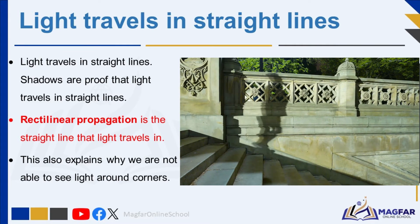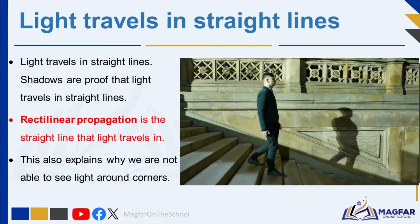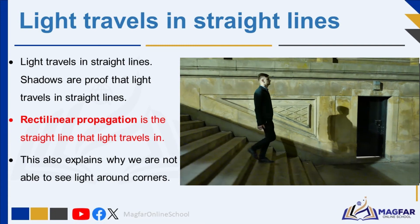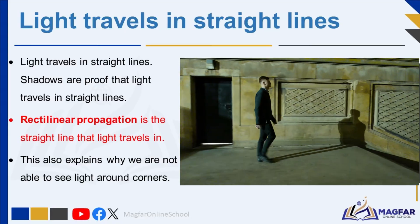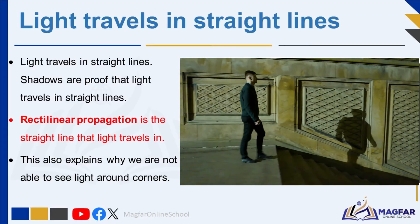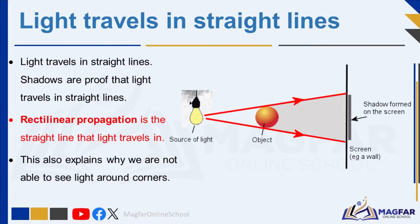An example of this principle in action is the formation of shadows. If light did not travel in a straight line, it would bend around objects, preventing the formation of shadows. Light travels in straight lines, and shadows are proof of this. Rectilinear propagation is the straight line that light travels in, which also explains why we are not able to see light around corners — the light is unable to bend around the corner and reach our eyes.